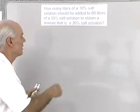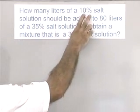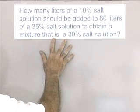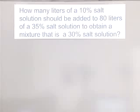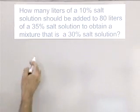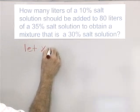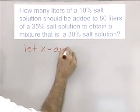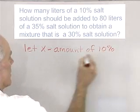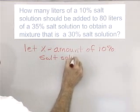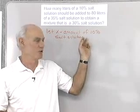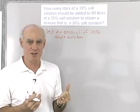Let's read the problem again and see what's asked for. We want to know how many liters of 10% salt solution should be added to 80 liters of 35% salt to obtain a mixture that's 30% salt. So we need to find that amount — let X equal the number of liters of 10% salt solution.